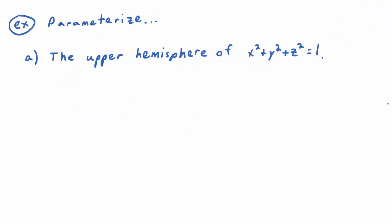You need to know how to parametrize a surface. In this example, let's parametrize the upper hemisphere of X² + Y² + Z² = 1. What does X² + Y² + Z² graph to be? It's a special sphere — the unit sphere — centered at the origin with radius equal to 1.